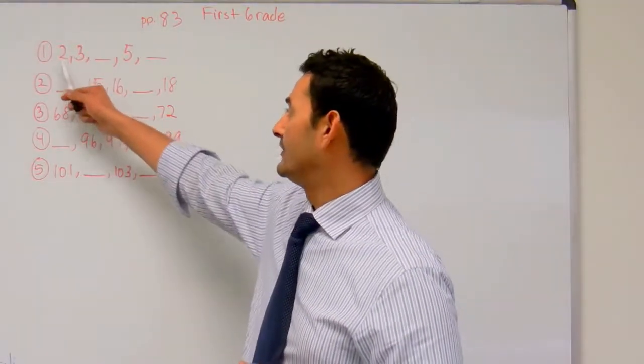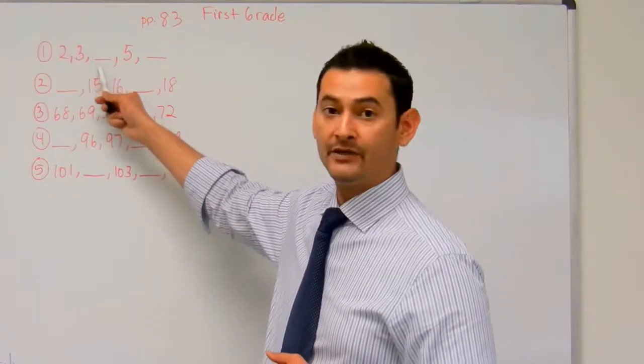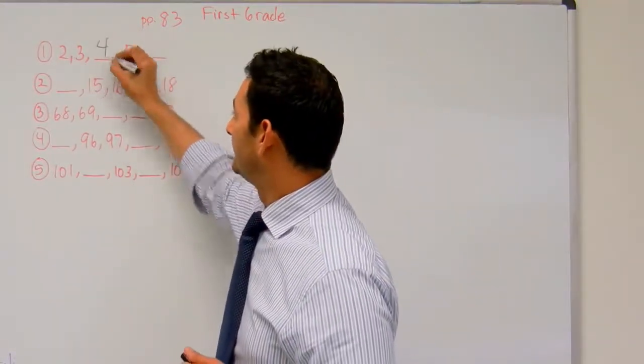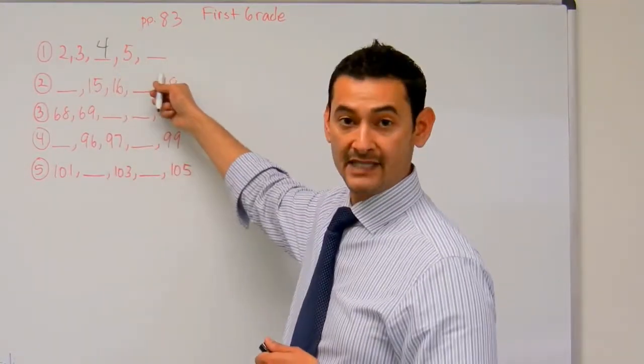So all we do is count: 2, 3, and what number goes there? 4, that's correct. And we have 5, and then what number goes next? 6.